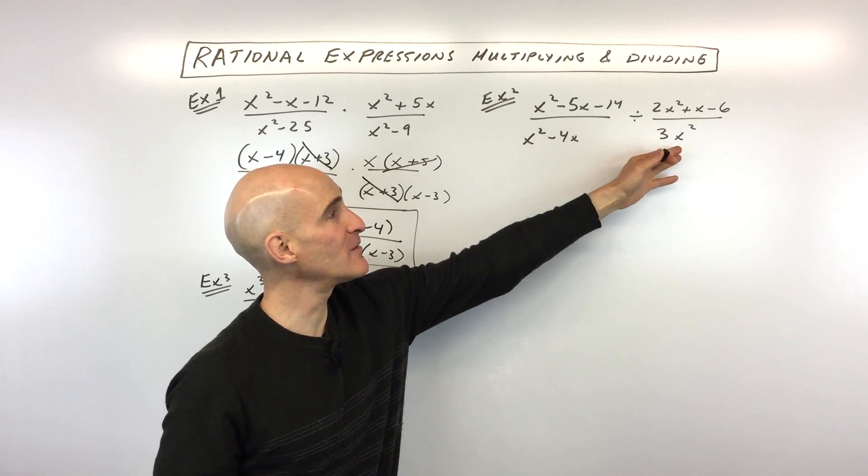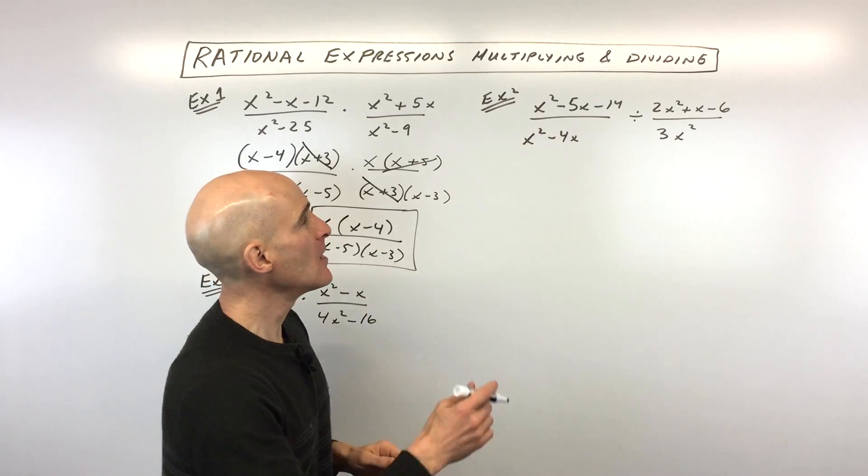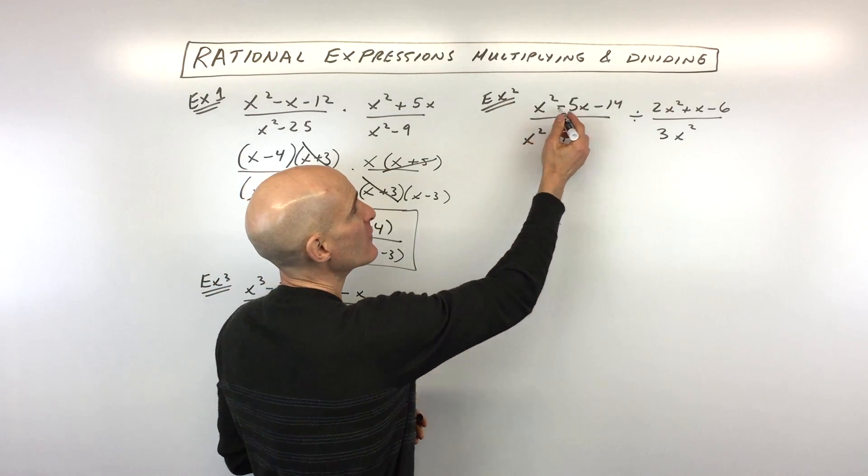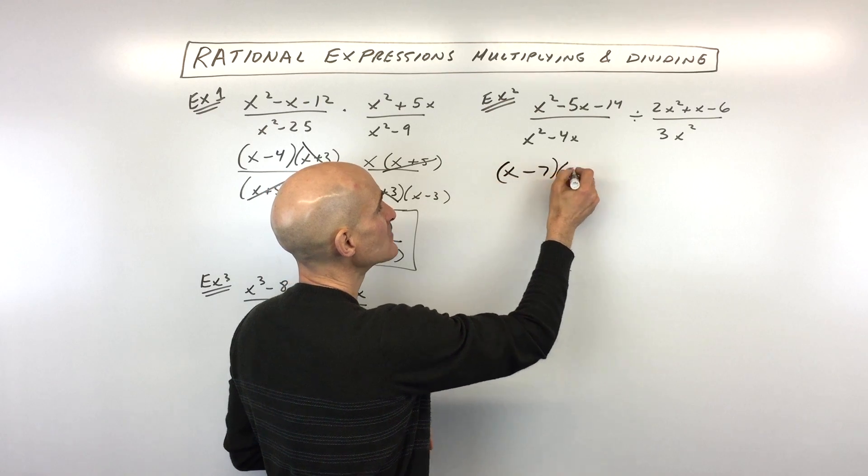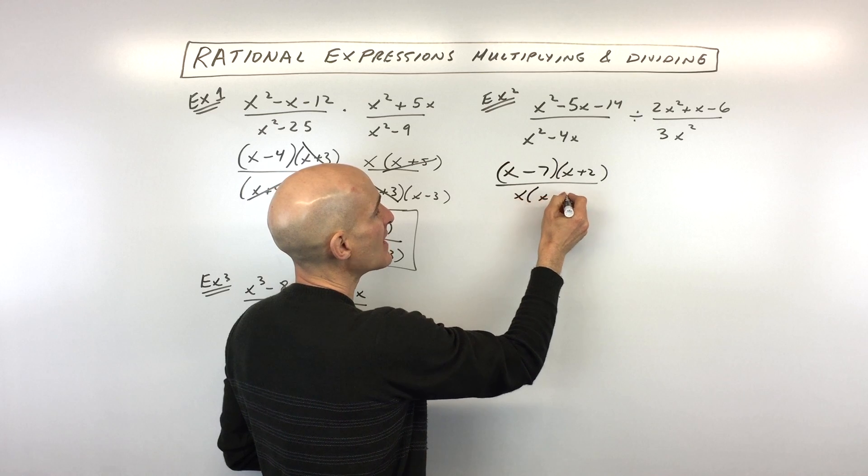So either way, keep it, change it, flip it, or multiply by the reciprocal to keep the first one the same. First step, though, is to factor. So I'm going to factor the numerator. That's x minus 7, x plus 2. The denominator we can factor out in x as the greatest common factor.